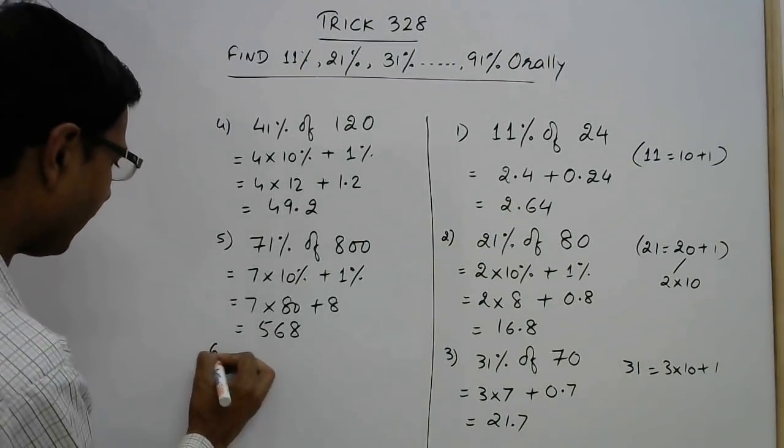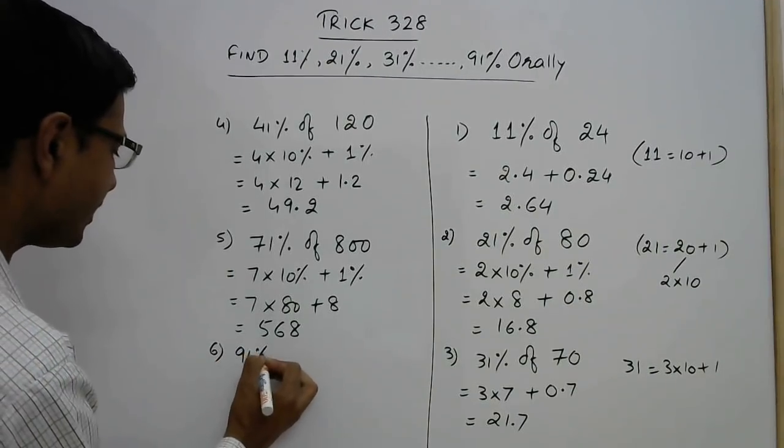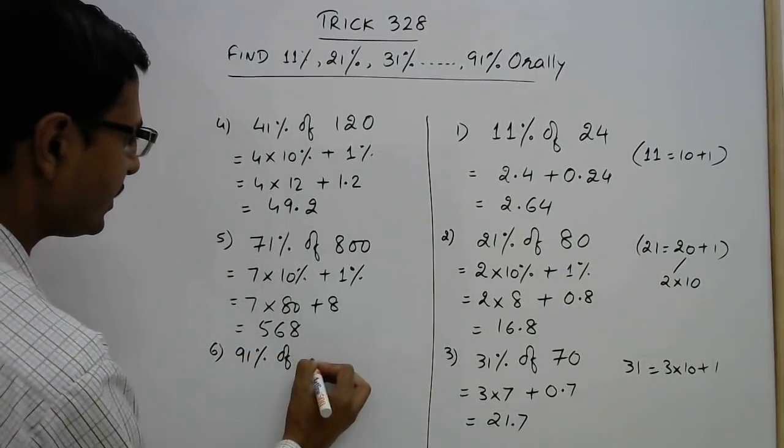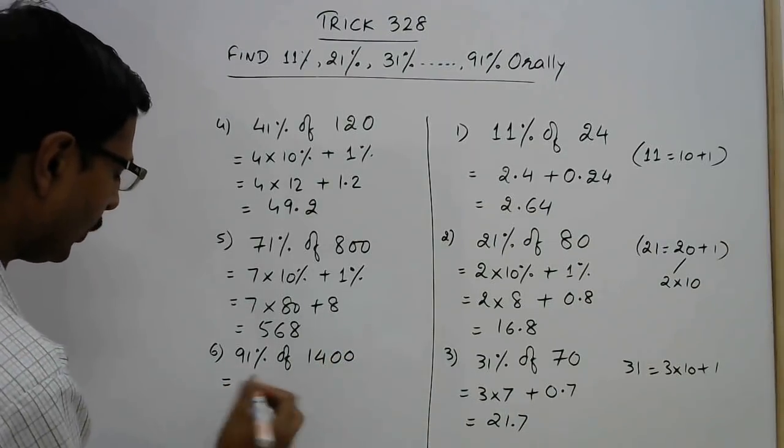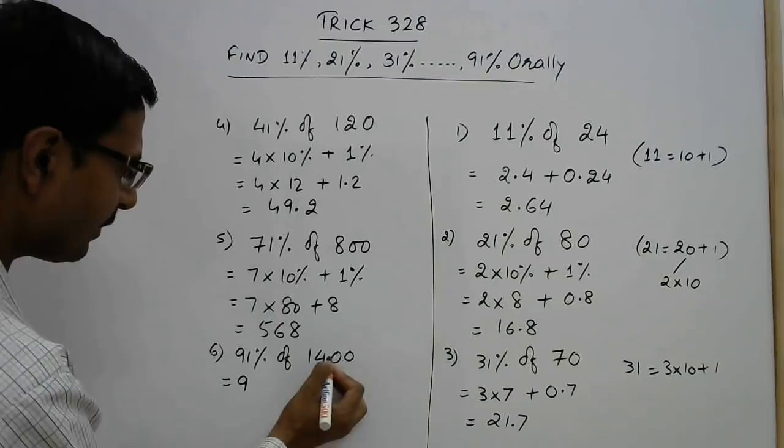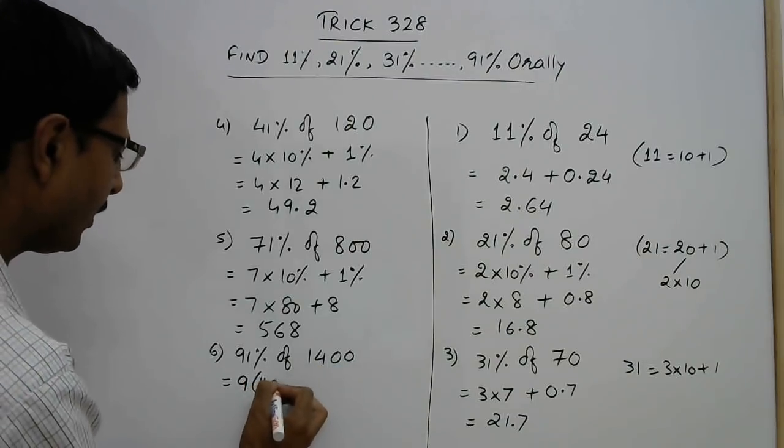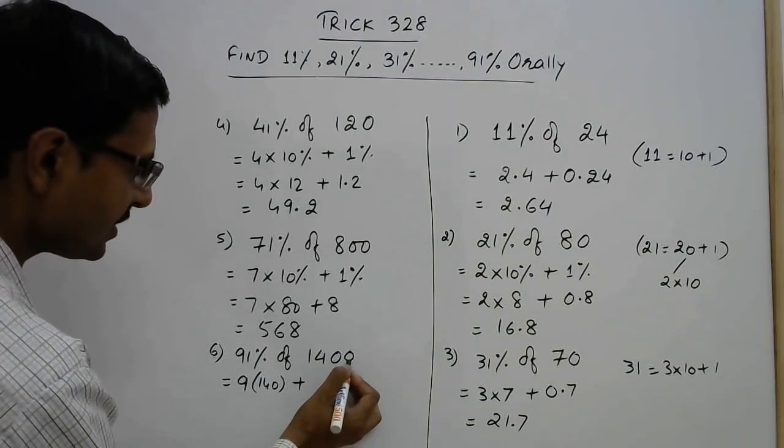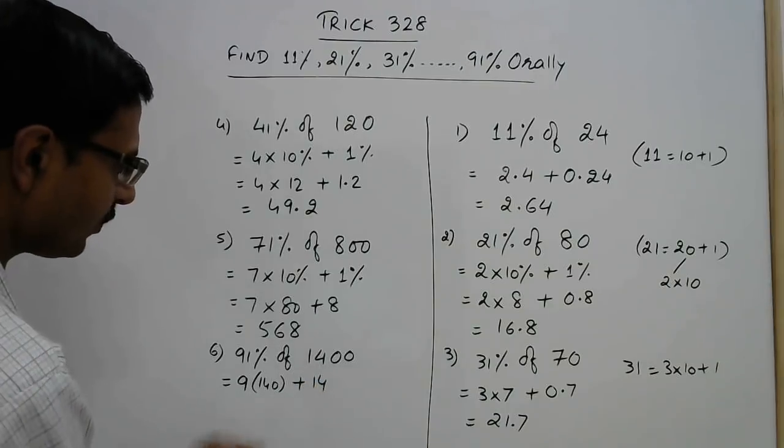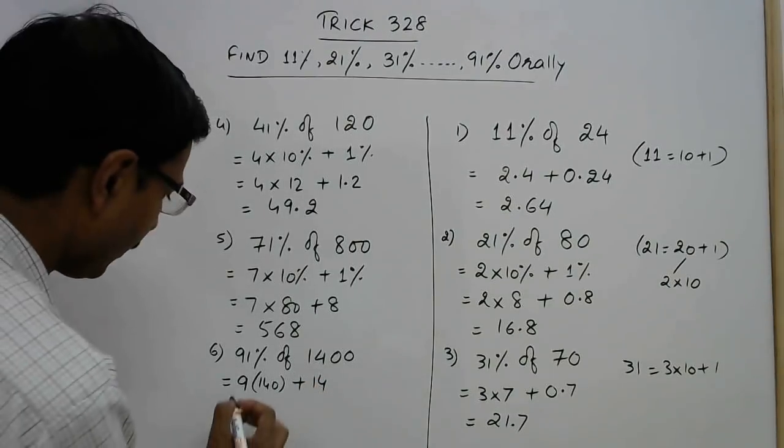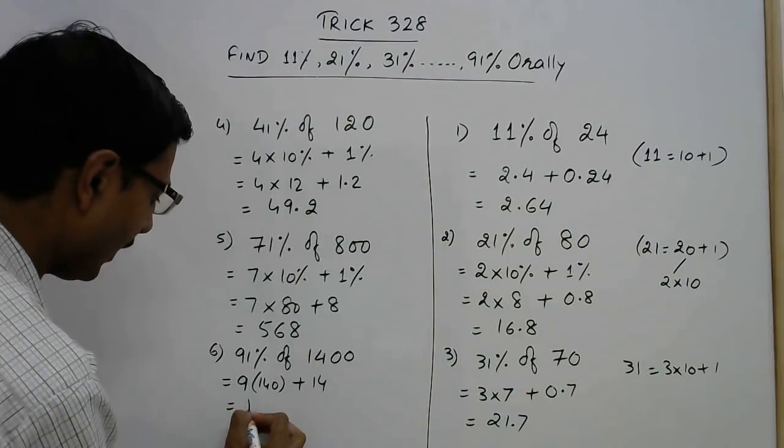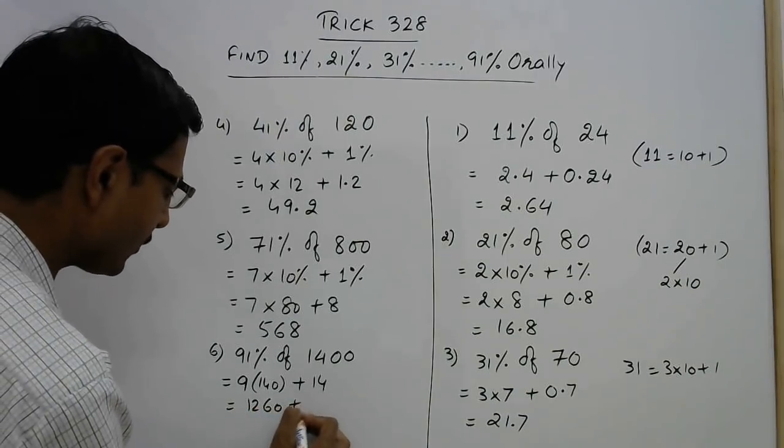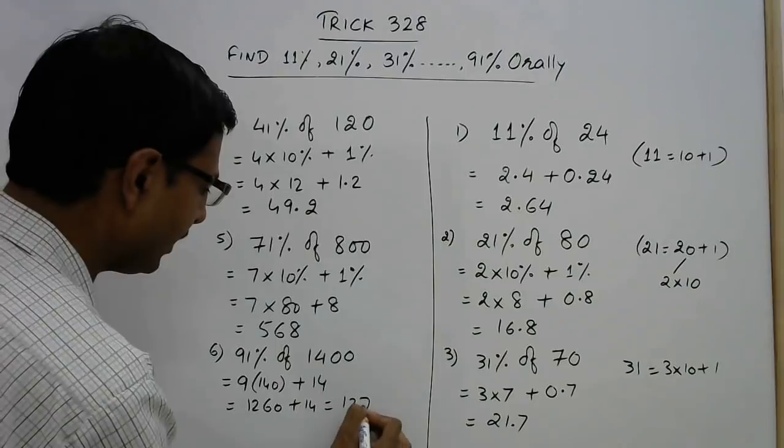Finally take one more, say we have 91 percent of say 1400. So I will do it directly here: 9 into 10 percent, 10 percent is 140, plus 1, 1 percent is 2 digits from the right side, it is 14. So 14 into 9, 126, 1260 plus 14, so answer is 1274.